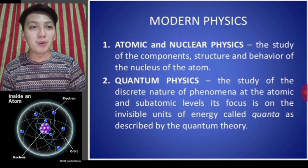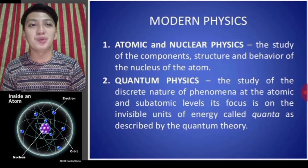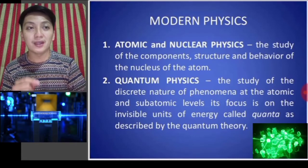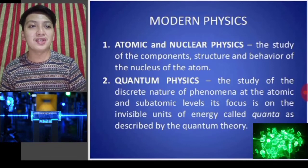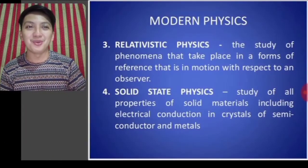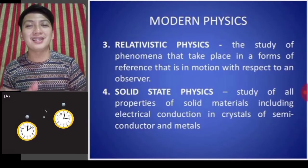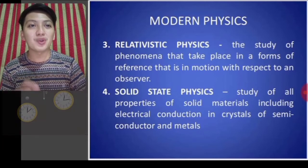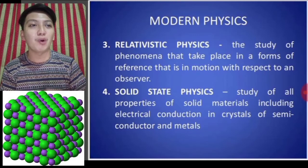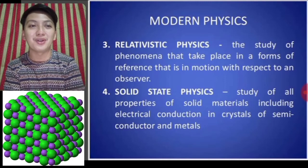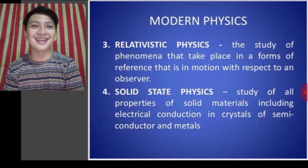Under modern physics we have atomic and nuclear physics — the study of the components, structure, and behavior of the nucleus of the atom. Quantum physics is the study of the discrete nature of phenomena at the atomic and subatomic levels, focusing on invisible units of energy called quanta as described by quantum theory. Relativistic physics is the study of phenomena that take place in frames of reference that are in motion with respect to an observer. Solid state physics is the study of all properties of solid materials, including electrical conduction in semiconductors and metals.